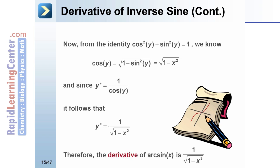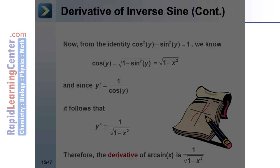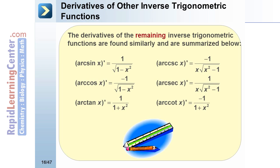Therefore, the derivative of arcsin x is 1 divided by the square root of 1 minus x squared. This leads us to the derivatives of other inverse trigonometric functions. The derivative of arccos x equals negative 1 over the square root of 1 minus x squared. The derivative of arctan x equals 1 divided by 1 plus x squared. The derivative of arccsc x equals negative 1 divided by x times the square root of x squared minus 1. The derivative of arcsec x equals 1 divided by x times the square root of x squared minus 1. The derivative of arccot x equals negative 1 divided by 1 plus x squared.